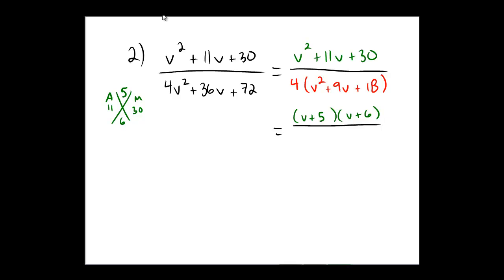How about the denominator? We already got the 4. And this time, I didn't get a nice pretty difference of squares thing. So I'll come over here and do my typical method of a and m. The adding number is the coefficient to the v, the linear term, which is a 9.